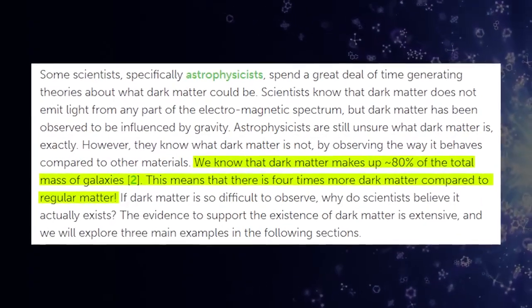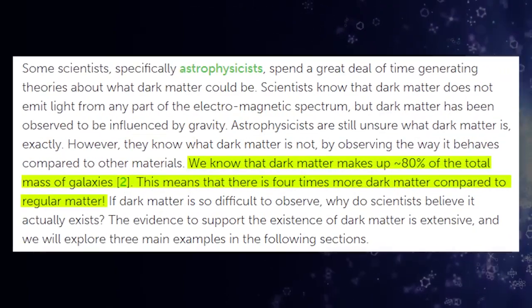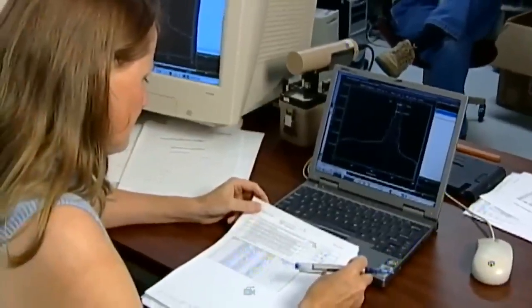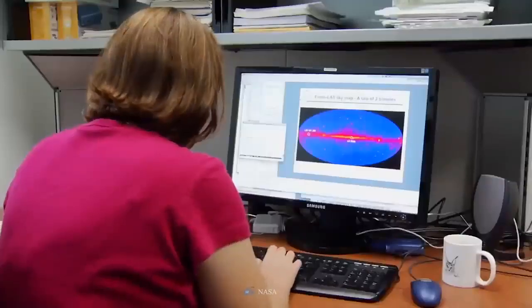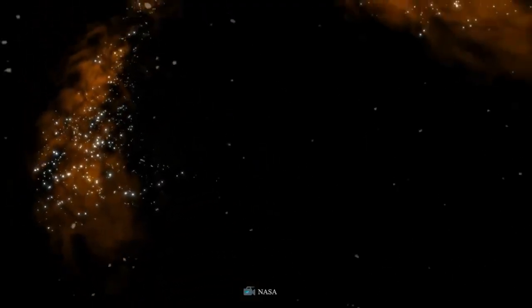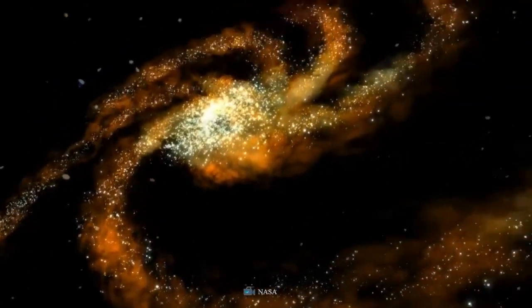About 80% of the mass of galaxies is thought to be dark matter. Thus, the ratio of dark matter to ordinary matter is 4 to 1. Why do scientists think dark matter exists if it is so hard to detect? There is a large body of data that points to the existence of dark matter. We will examine three of the most important pieces of evidence.